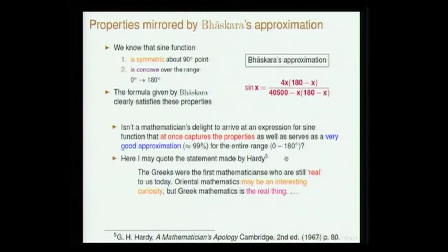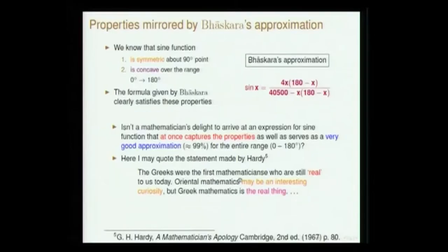At this stage I would like to quote Hardy. He says that the Greeks were the first mathematicians who are still real to us today. Oriental mathematics may be an interesting curiosity, but Greek mathematics is the real thing. This is the kind of statement Hardy makes in the early part of the 20th century.